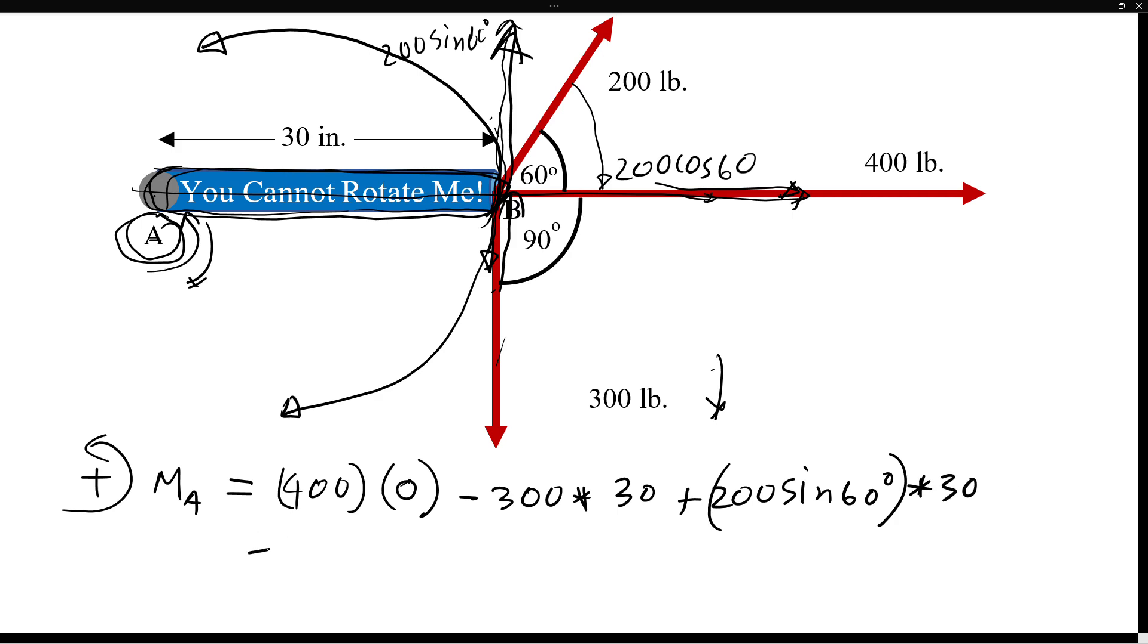If you calculate, this one will be zero, this one 9000, and then this one I found 5196.15. If you add all of these two that's going to be minus 3803.85 pound inches of moment. That's going to be clockwise moment.